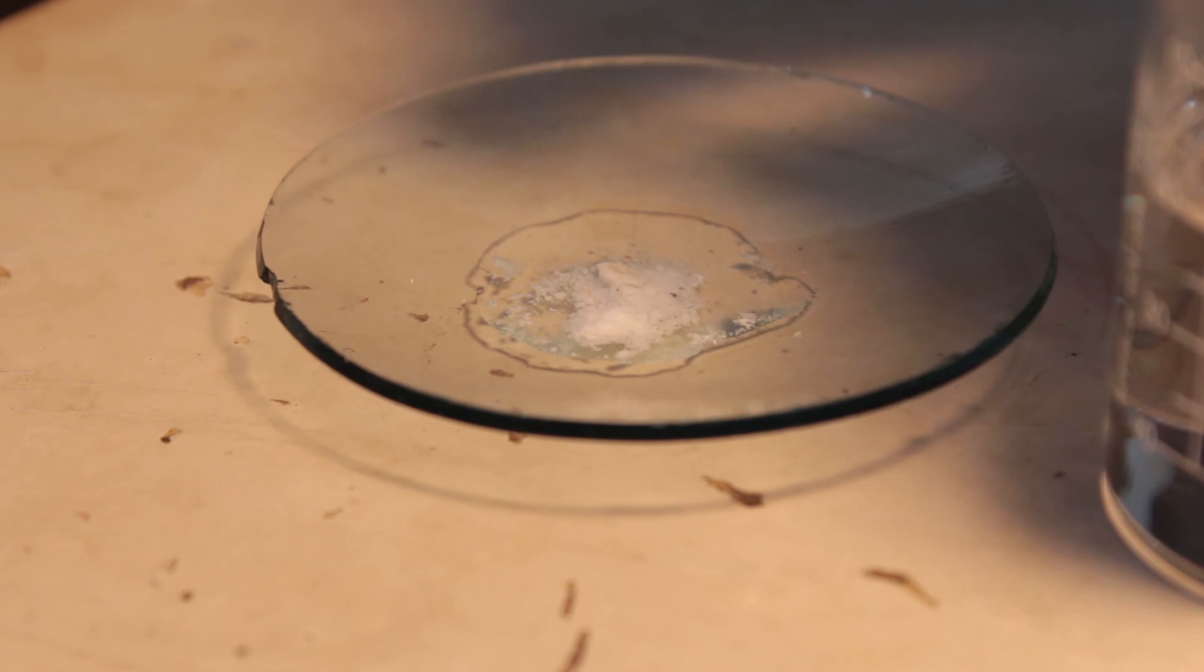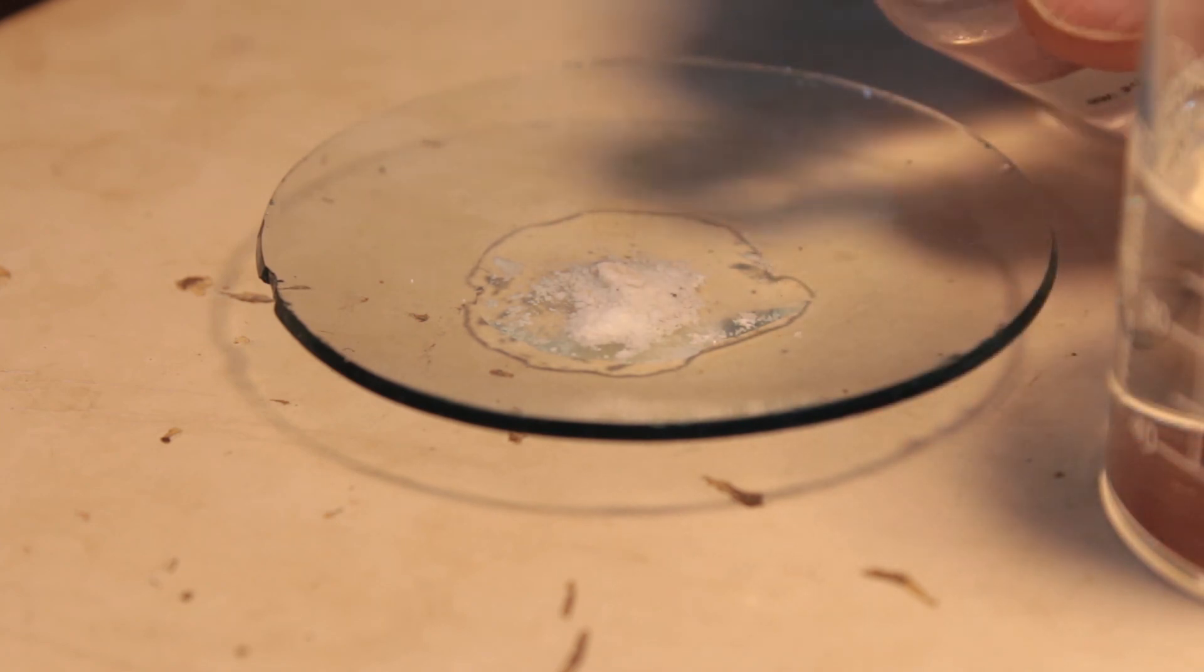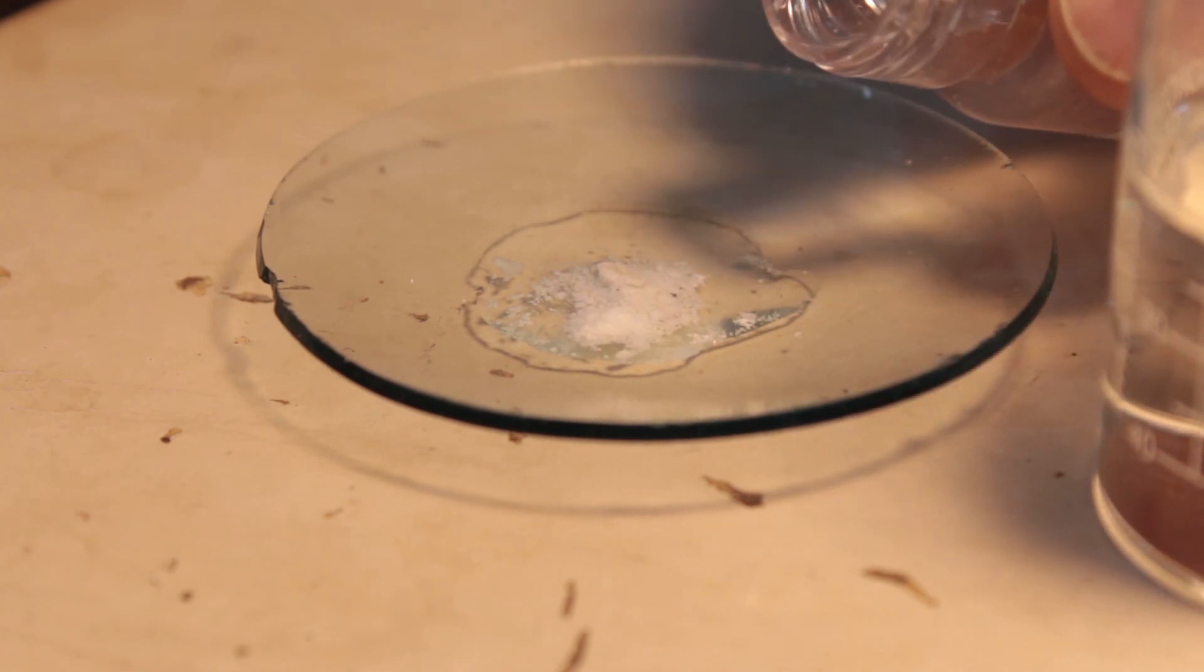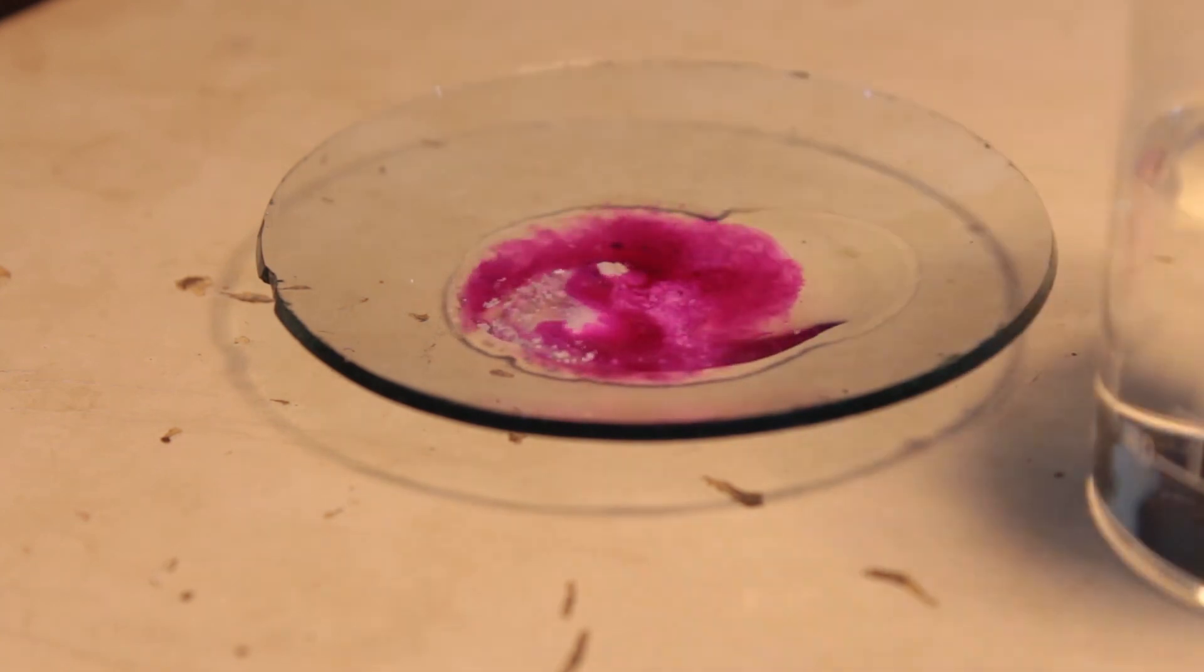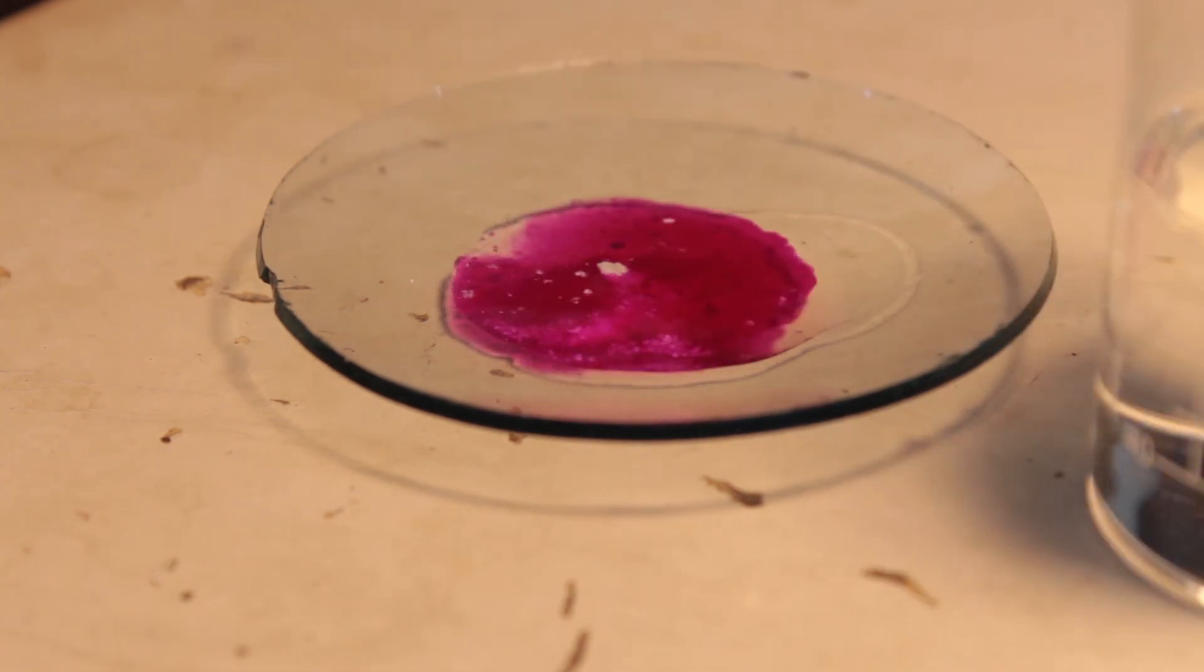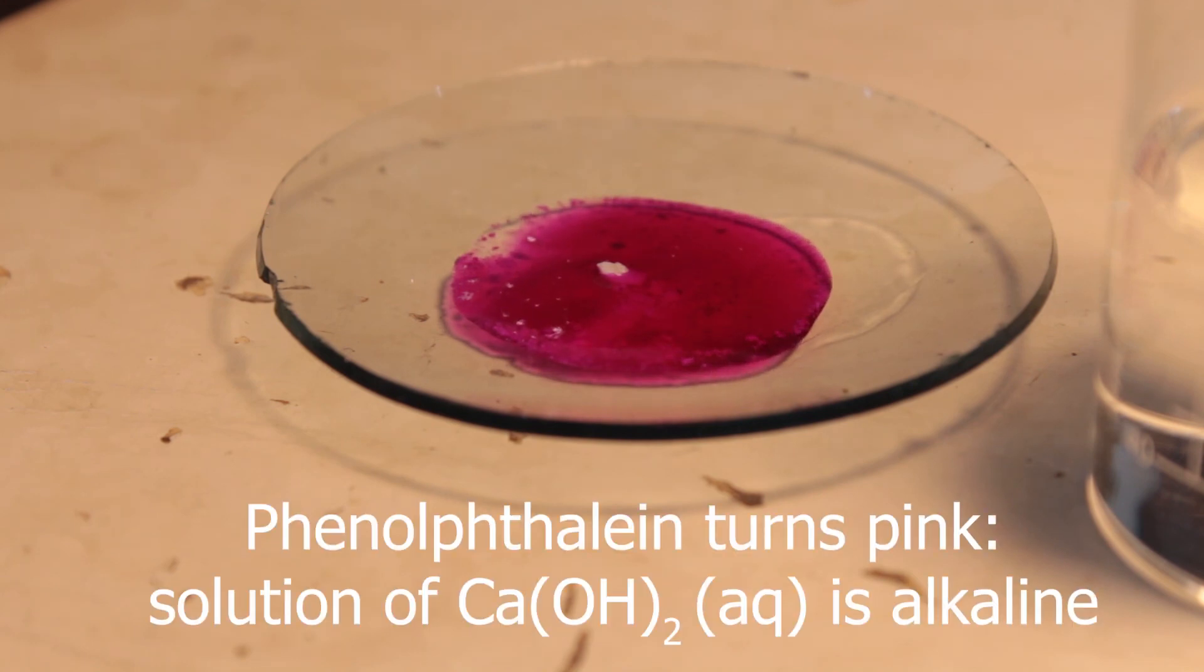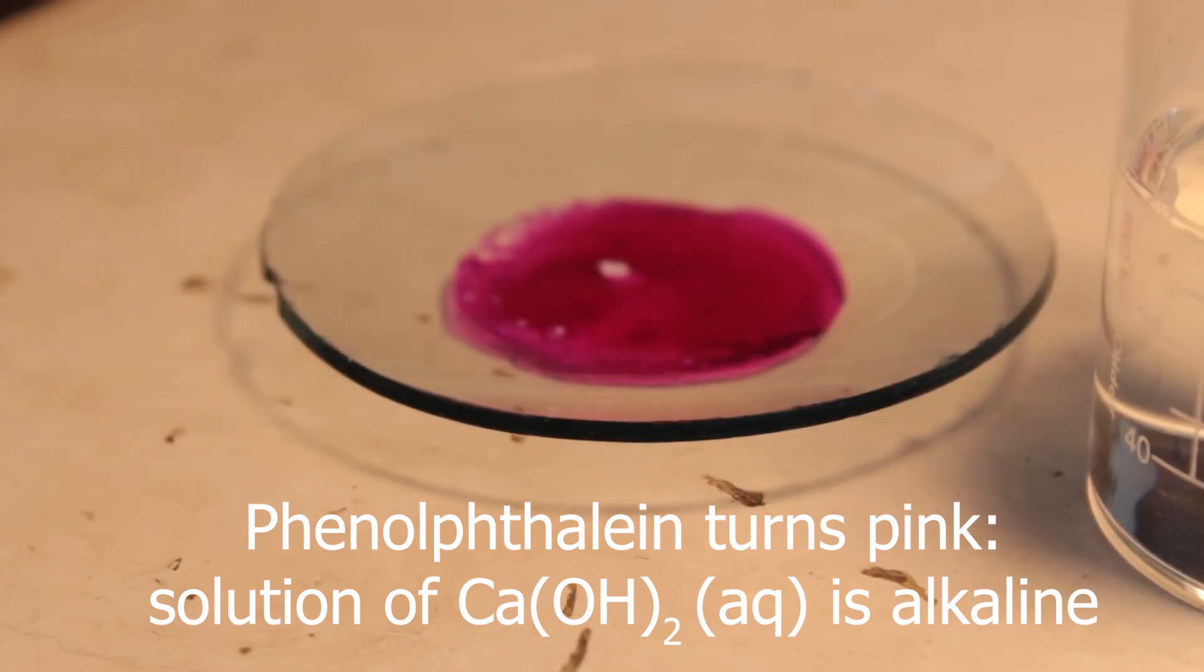Here, I'm adding it to lime water, because essentially when I dissolve calcium hydroxide in water, I get lime water. So here, I'm just checking that it's alkaline. My phenolphthalein turned pink, nicely showing that solution of calcium hydroxide is alkaline.